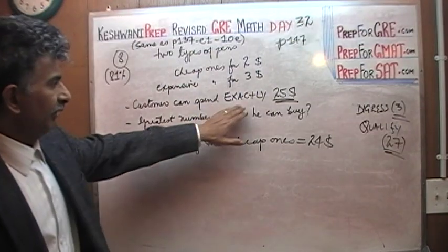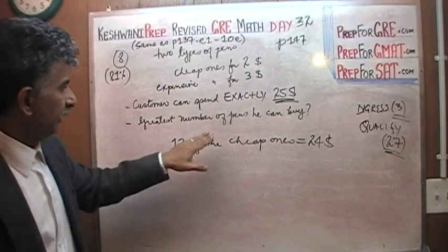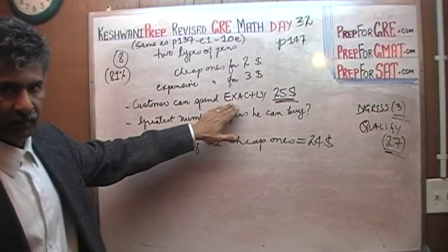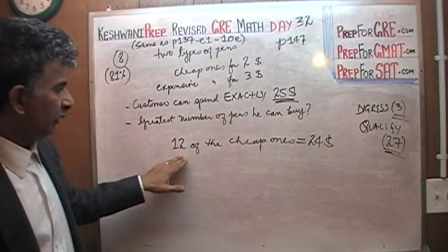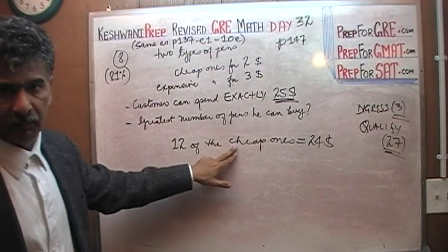Well, if you are told that you have to spend exactly $25, see, this is not the case here. Here, before we were told he can spend up to $25. What's the greatest number of pens that he can buy? He can buy 12 pens for $2 each, the cheap ones, and spend $24 and still have a dollar left over.